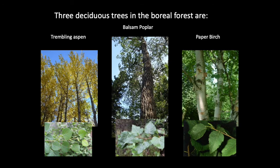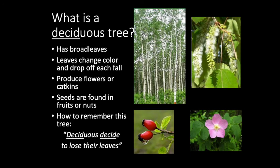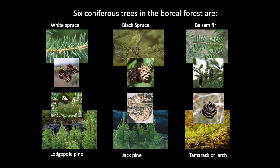What is a deciduous tree? They have broad leaves. The leaves change color and drop off each fall. They produce flowers or catkins, and seeds are found in fruits or nuts. One way to remember this is: a deciduous tree decides to lose their leaves.